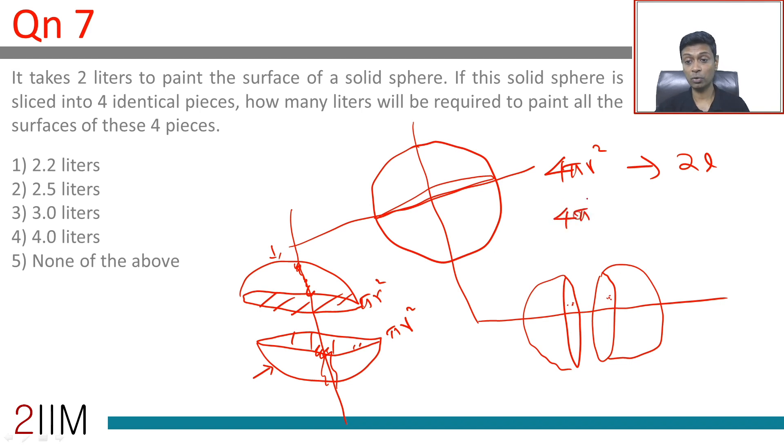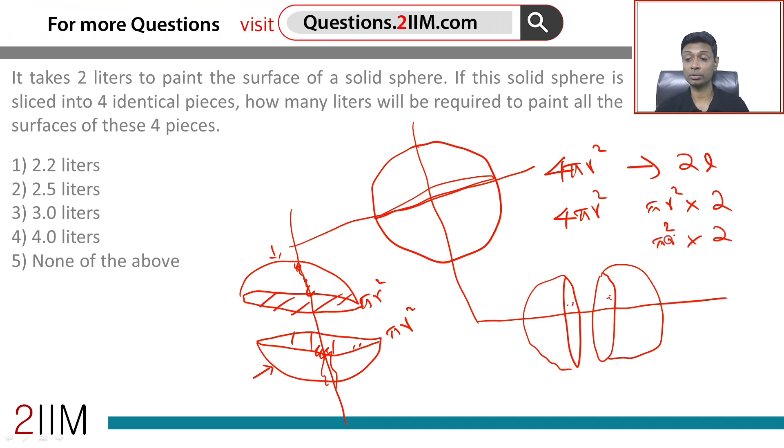So to our original 4πr², we add πr² twice, twice over. Or to 4πr² we add 4πr², and we're going to 8πr².